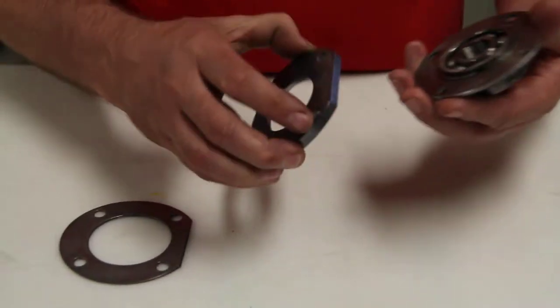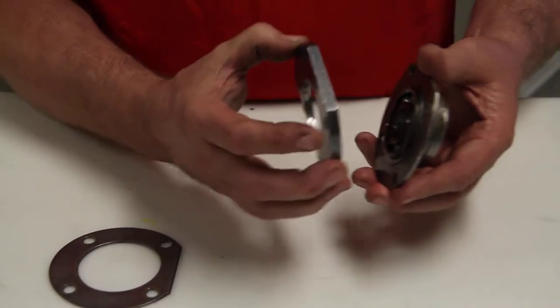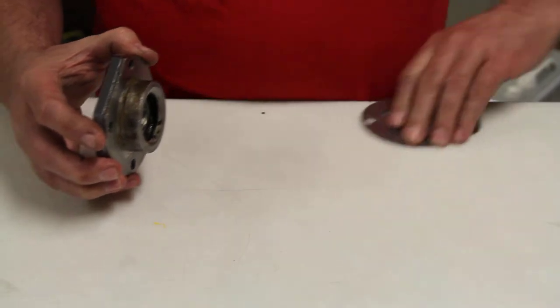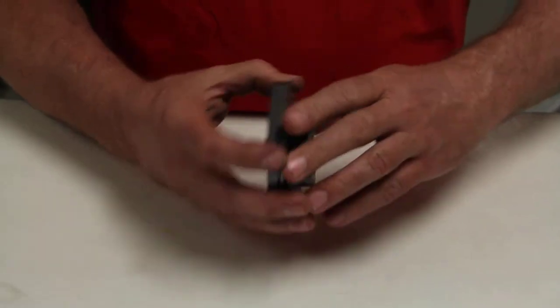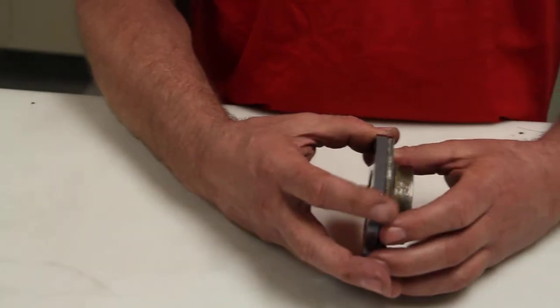The pinion holder - this is the stock piece here - this goes here. The shims go on the back side here. We sell these shims too: there's a 10, 20, and 30 thousandths shim.